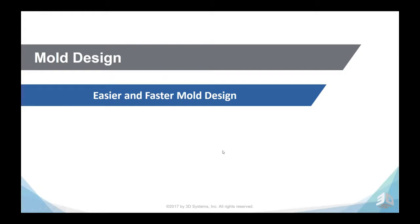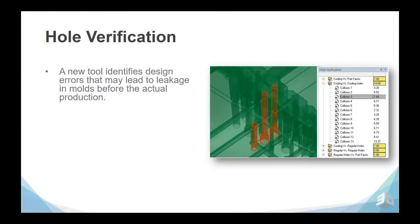In mold design, there is today easier and faster mold design. For hole verification — a new tool — it identifies design errors that may lead to leakage in molds before actual production. We analyze all the holes in the mold, and whenever the distance between holes, or between a hole and any shell surface or skin, is smaller than a given value, it is highlighted in red and gives us information that a problem may occur here, so you can verify that before proceeding with the design.